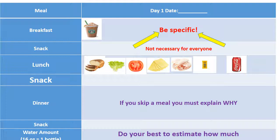At the very bottom of this template, I have a separate column for water. You are going to be listing the amount of plain water that you are intaking on those three days. Do your best to estimate this — for example, one standard water bottle that you'll get out of a vending machine, or that maybe mom or dad buys from the store, is 16 ounces. If you have something like a coffee, a can of soda, a tea, or milk, you are going to put those items next to the meal that you had them. Water is the only thing that's going to be listed separately.